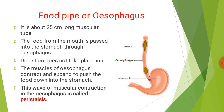The pharynx leads to the next organ called the food pipe or esophagus. It is about 25 cm long. The food from the mouth is passed into the stomach through the esophagus. Digestion does not take place here. The muscles of the esophagus contract and expand to push the food down into the stomach. This wave of muscular contraction in the esophagus is called peristalsis.